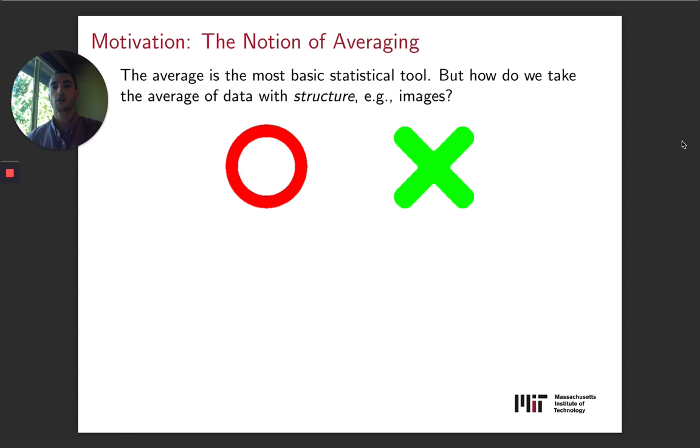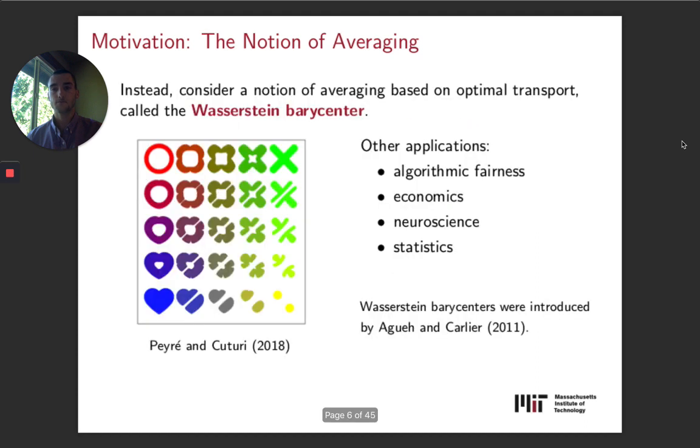The motivation for our work has to do with averaging. The idea is that if we want to average data with some geometric structure, such as images, then the simple pixel-wise average won't necessarily be particularly meaningful. There is an innovation around 2011 by Agueh and Carlier,